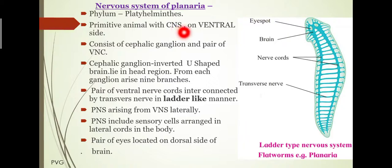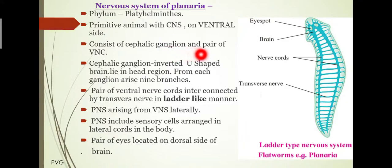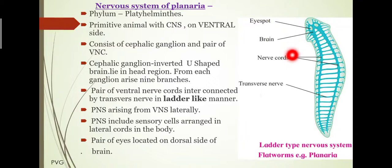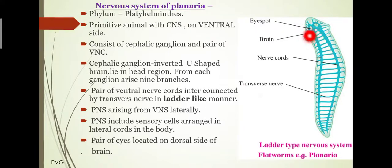This central nervous system is present on the ventral side of the body, which is the characteristic feature. It consists of a mass of cerebral or cephalic ganglion, appearing as an inverted U-shaped brain. That lies in the anterior or head region, and from each ganglion arises nine branches towards the outer side.